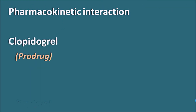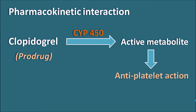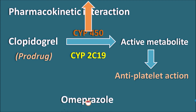Clopidogrel is actually a prodrug which must be activated within the biological system to produce its anti-platelet action. Clopidogrel can be converted into its active metabolite by the cytochrome P450 system, and once converted into the active metabolite, it can show its anti-platelet action. The cytochrome P450 enzyme responsible for this conversion is CYP2C19. This CYP2C19 enzyme is blocked by omeprazole.